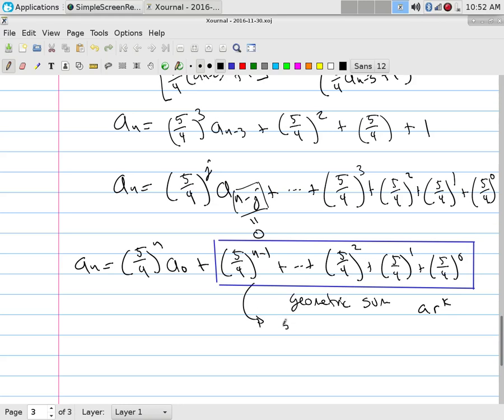It's the next term minus one divided by 5/4 minus 1. So that means that this guy is going to be [(5/4)^n - 1] divided by [5/4 - 1]. Something that we all should know. Anybody remember that formula at all?